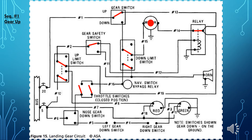Once the gear is fully up, the up limit switch will change position, opening the circuit to the gear relay and de-energizing it. Once the gear relay is de-energized, its contacts will open, stopping the flow of electrical current to the gear motor and effectively shutting it off.